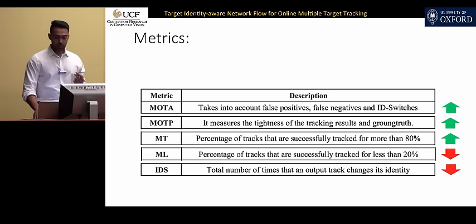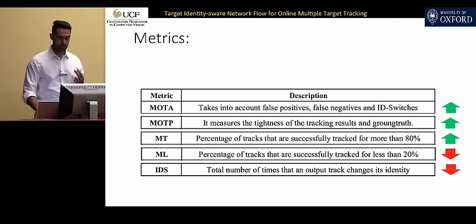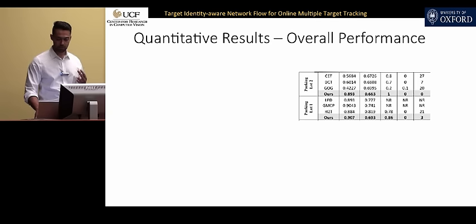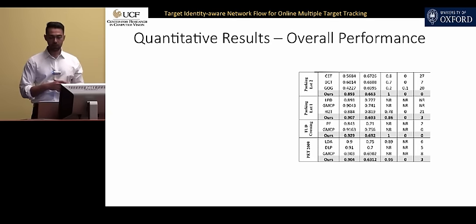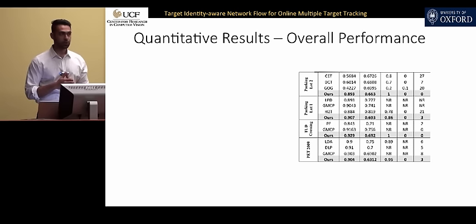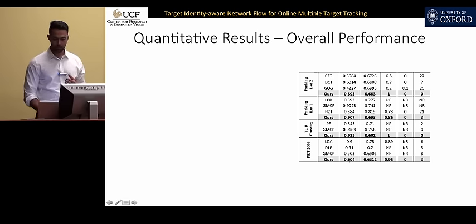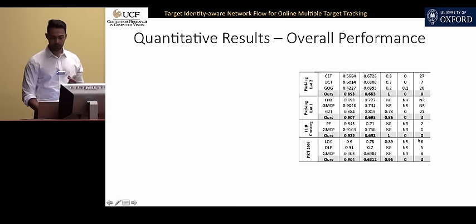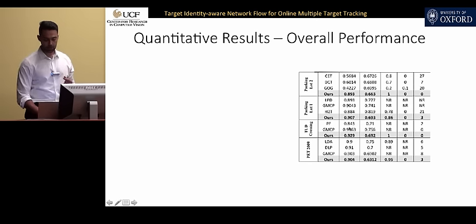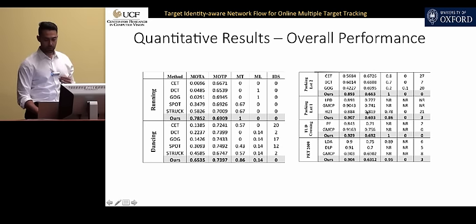For quantitative evaluation, we use CLEAR metrics MOTA and MOTP, and trajectory-based measures: mostly tracked, mostly lost, and ID switches. On the right, you see results on sequences where a pre-trained object detector works well: Parking Lot 2, Parking Lot 1, TUD Crossing, and PET 2009. Looking at the MOTA column, mostly tracked, and ID switch columns, we can do better compared to other methods in those metrics.